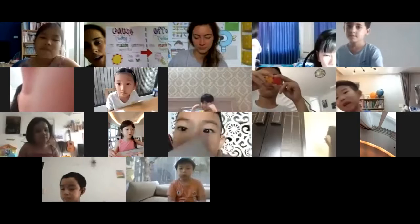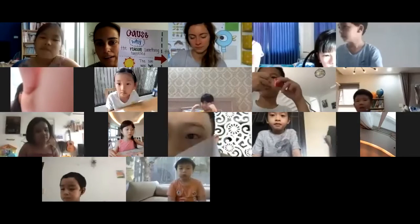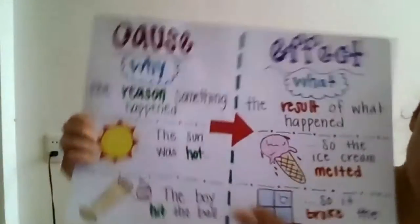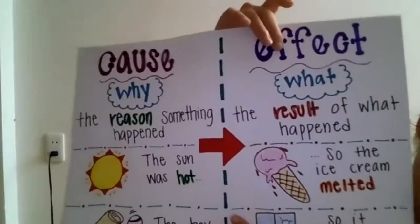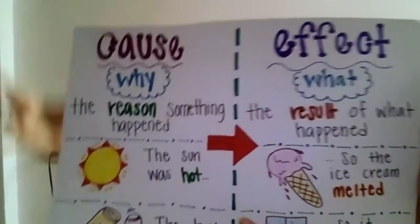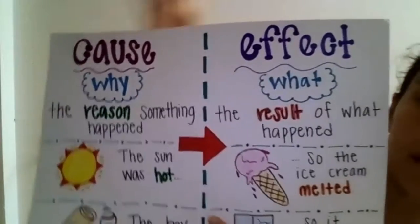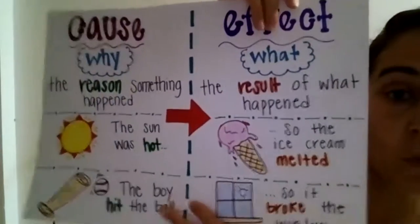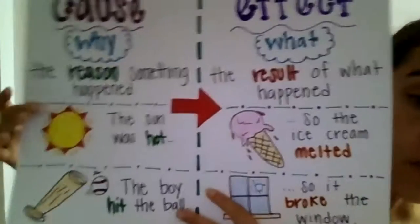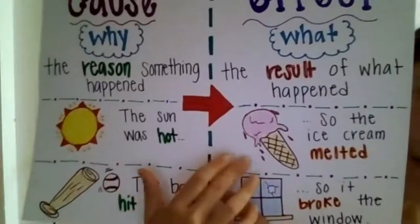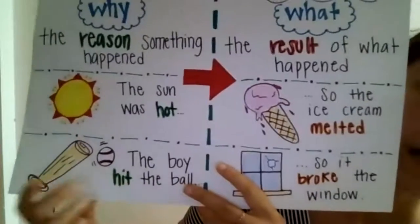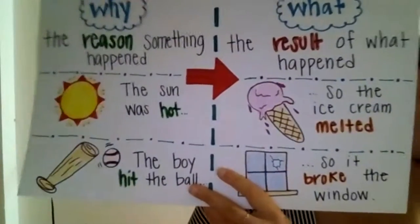Grade one, we talked about cause and effect. The reason something happens is the cause, and what happens as a result is the effect. So when it's hot, the ice cream melts. If you hit a baseball very hard, the window breaks. That's cause and effect.